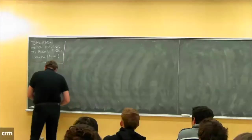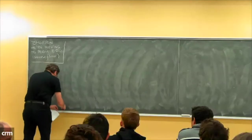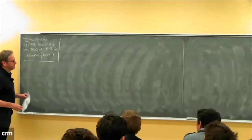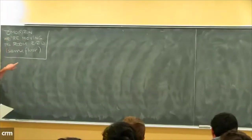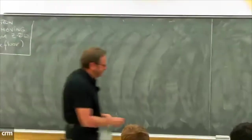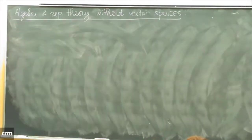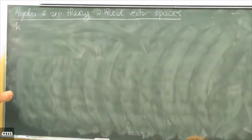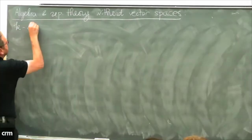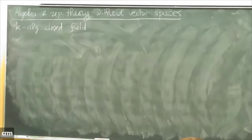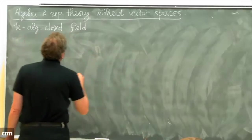My lecture today is called Algebra and Representation Theory of Vector Spaces. I'm going to work over a field k, which is an algebraically closed field of arbitrary characteristic. Let's consider the following category.